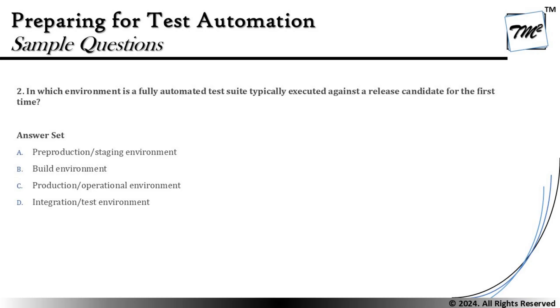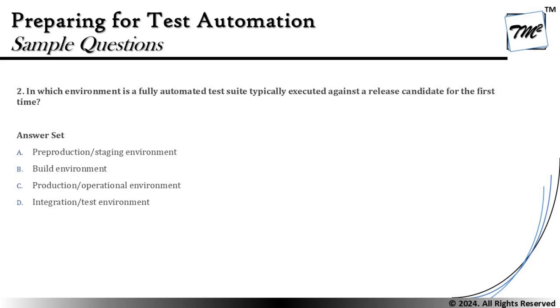Question two asks: in which environment is a fully automated test suite typically executed against a release candidate for the first time? This is not overly tricky, but there are keywords that can distract you. For example, the phrase 'release candidate' might lead you to think about pre-production as the last environment before production. But they also say 'fully automated test suite,' which is another area of concentration. It's not necessarily true that a fully automated test can only be executed in pre-production — it can be done earlier. You have to think in the context of automation.